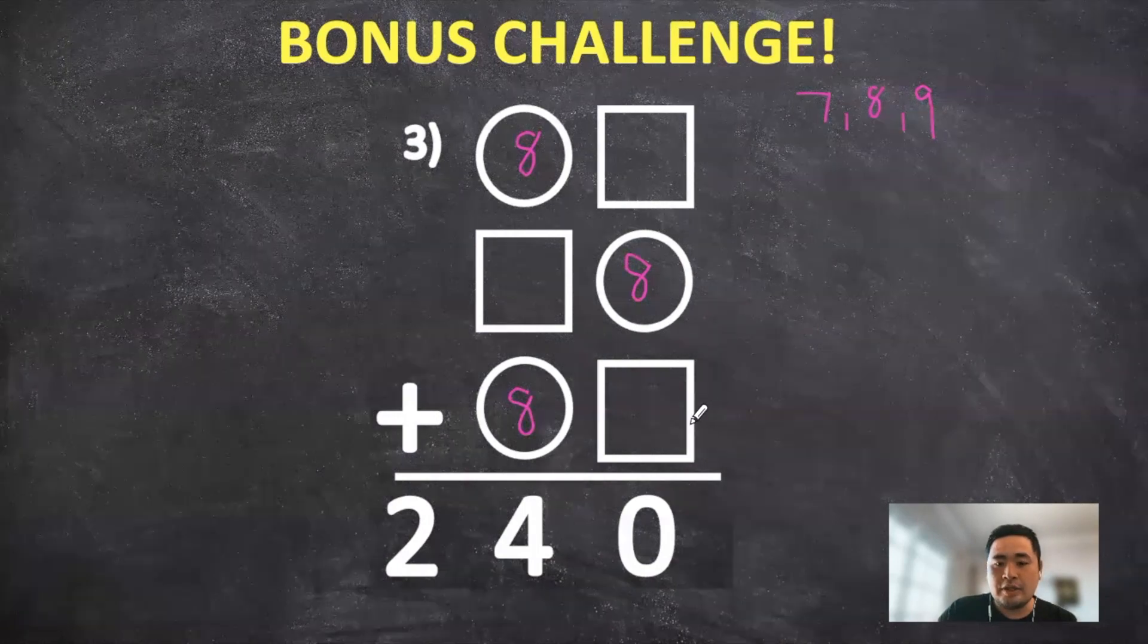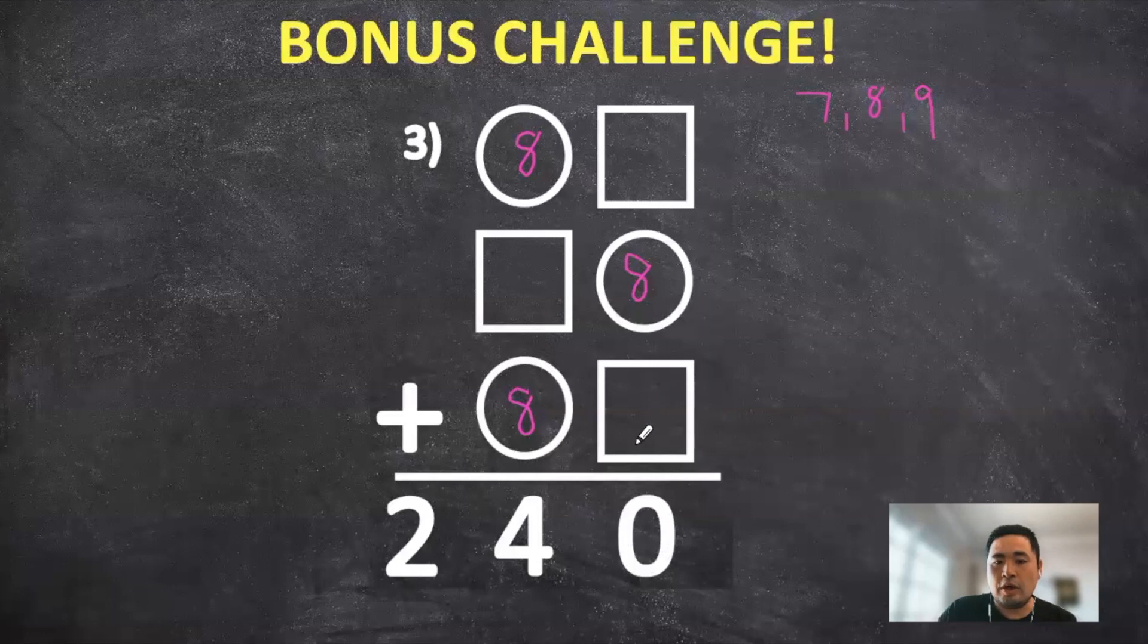Now in the ones column, we need to get a zero here. So 1 and 1 would be a possible answer.